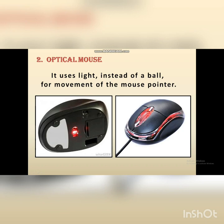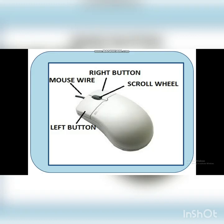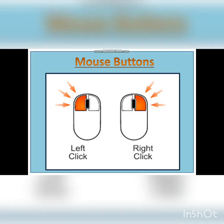Let's revise what we have done. This is the mouse wire, left button, right button, and this wheel is called the scroll wheel. Mouse buttons: there are two buttons on the mouse — the left button and the right button. When we click the right mouse button, we call it a right click, and when we press the left mouse button, we call it a left click.